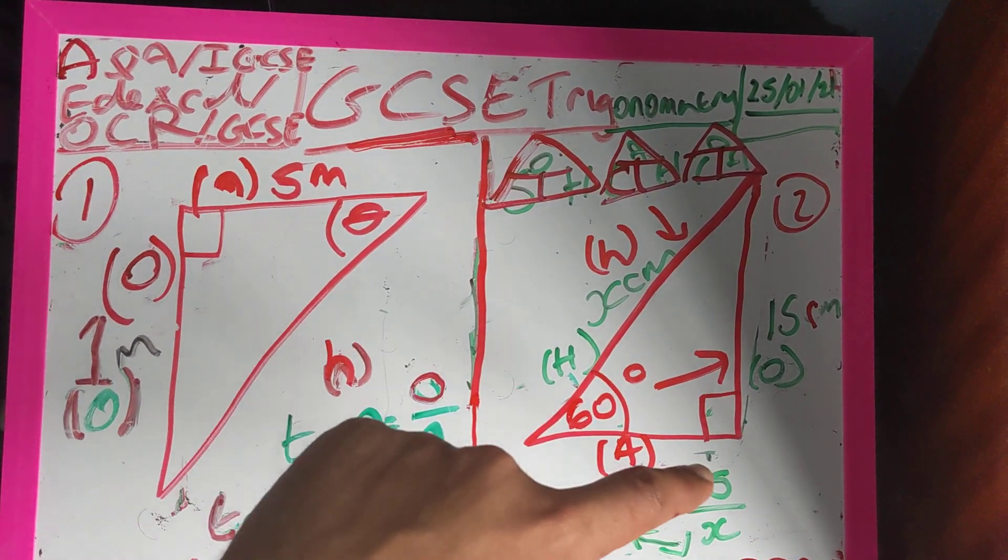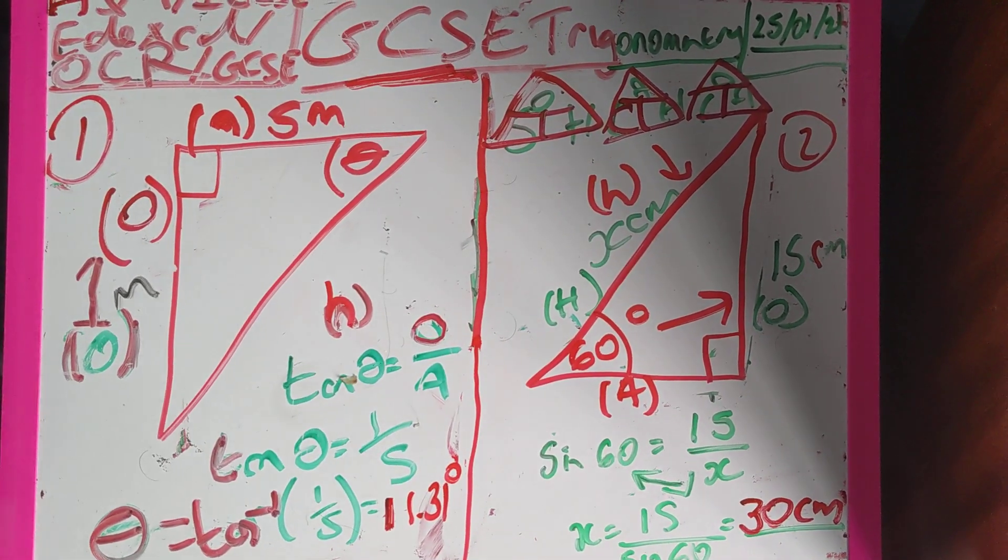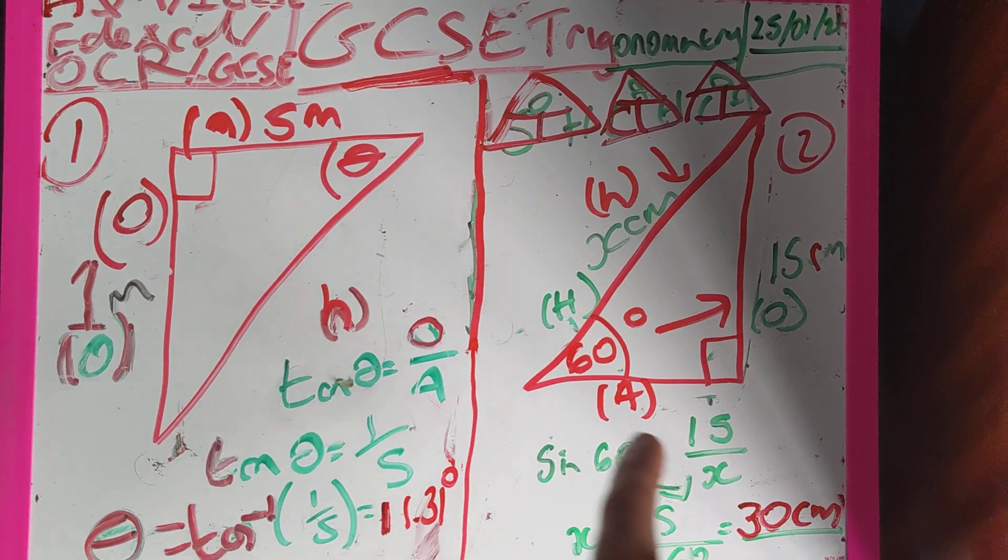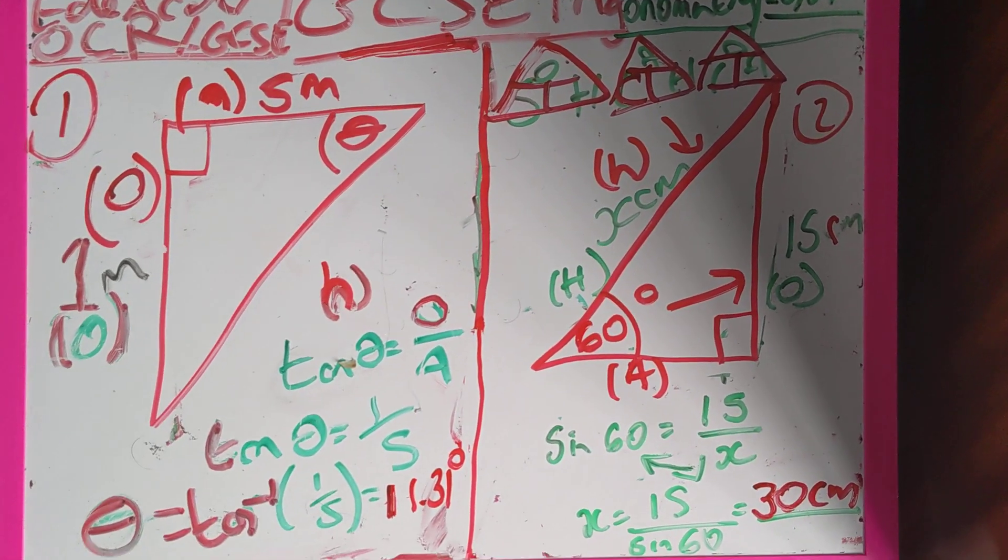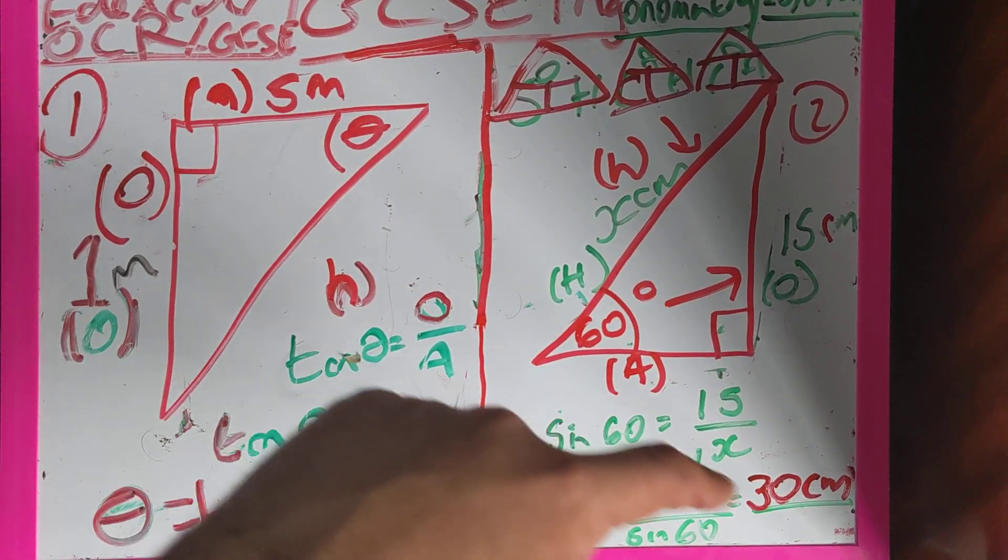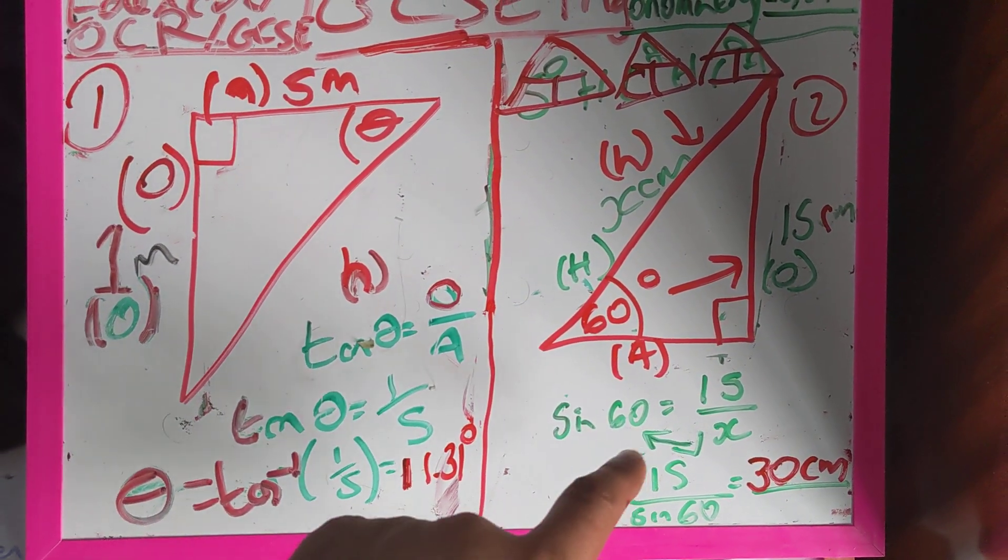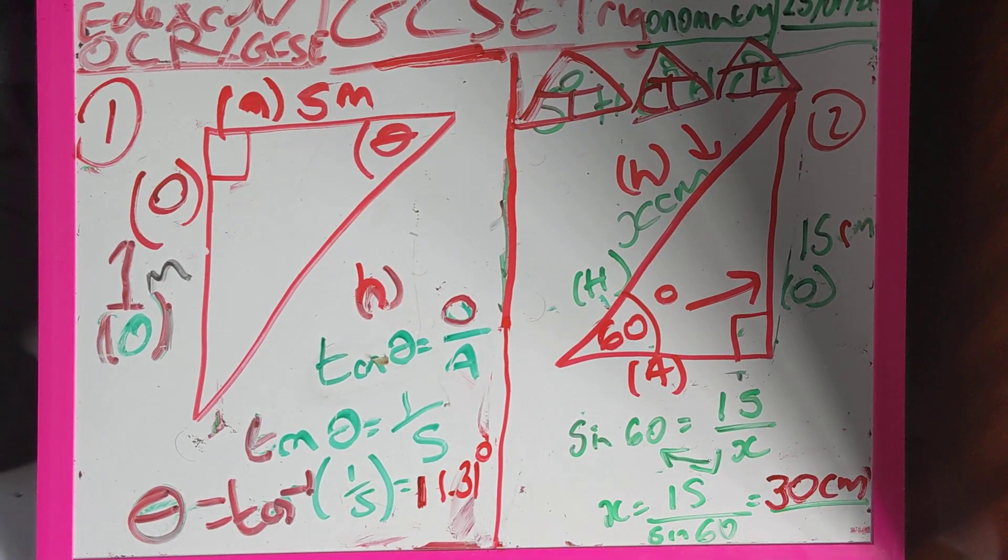So sine of my angle is opposite over the hypotenuse, sine of 60 equals 15 over X. Rearranges, so times up by X and divide by sine 60, I get X equals 15 divided by sine 60, which is 30, because sine 60 is a half. So 15 divided by half is the same as times up by 2, so my answer is going to be 30.